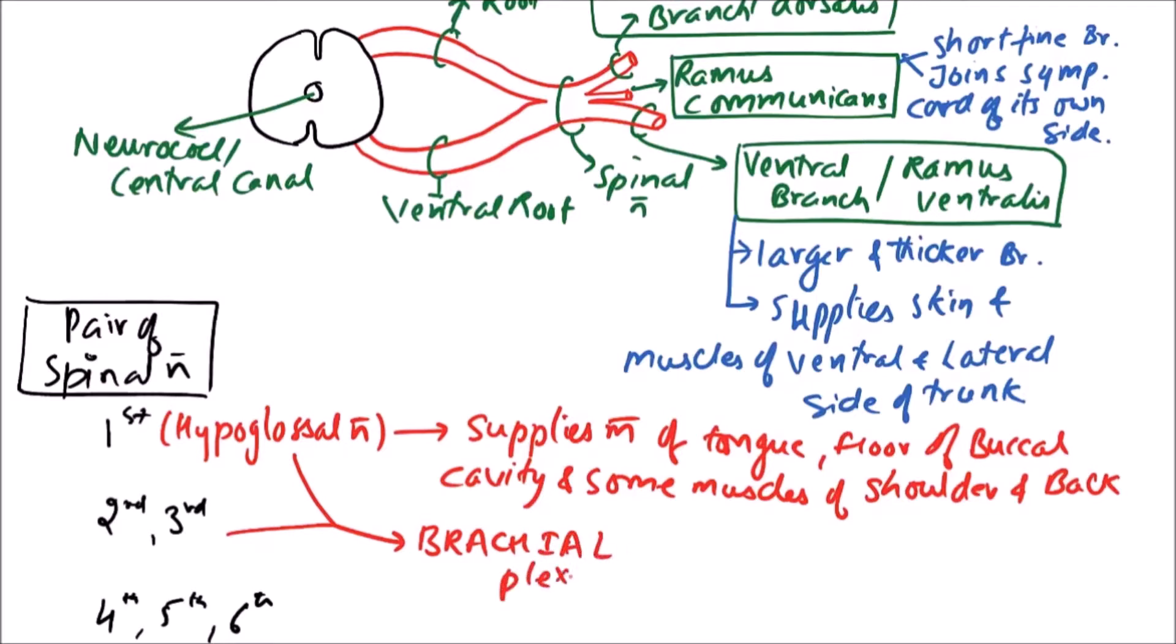So it forms brachial plexus with second and third pair of spinal nerves. Brachial plexus, brachium means arm, so it is forming the brachial plexus and brachial plexus supplies to skin and muscles of forelimbs of frog.